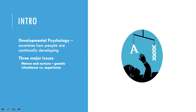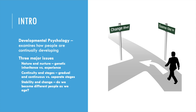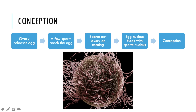The second issue is continuity and stages, answering the question of whether development is gradual and continual, or does it proceed through a sequence of distinct stages? And the third is stability and change — do we become different people as we age?